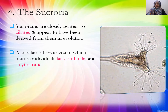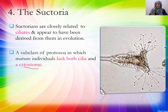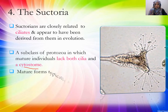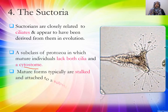Mature Suctoria have a cytostome — which means mouth opening. In the unicellular organism, the mouth opening engulfs prey. It has cilia and a cytostome when immature; the mature form has a stalk-like structure and is attached to a substrate.